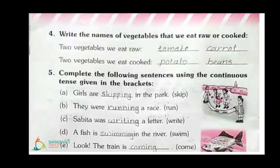Ok students, last update: the fifth number exercise is complete. Now, complete the following sentences using the continuous tense given in the brackets. What is the continuous tense? Continuous means ongoing — adding '-ing' to the verb.